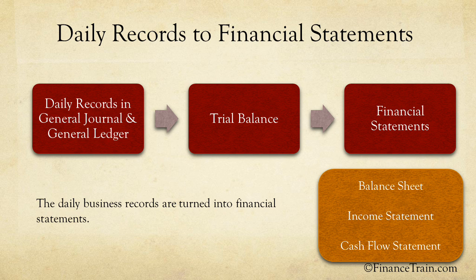The balance sheet tells us the financial position of the company on a particular date, providing critical information about the value of the firm's assets, liabilities and the owner's equity. The income statement provides details of the total revenues, expenses and net profit or loss for the business in a given period of time. The cash flow statement describes the amount of cash going in and out of the business over a period of time, showing the movement of cash in operating, investing and financing activities.